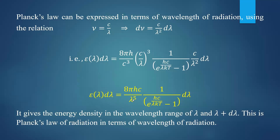As wavelength increases, the energy density is observed to be lesser — in the higher wavelength region, the energy density emitted by the body will be lesser. It is inversely proportional to λ⁵, and λ also appears in the exponential part. Both terms decide the energy density as a function of wavelength.